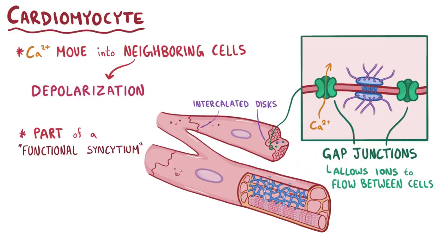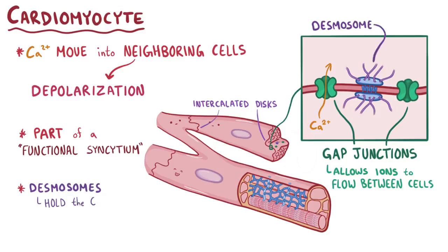In addition, cardiomyocytes stay physically attached to one another through proteins called desmosomes, which are like staples that hold the cells together when they're contracting.